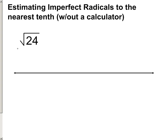We've got to find between what two whole numbers this radical lies. 4 squared is 16, and 5 squared is 25. This is 24, so it fits right in between those. That means on a number line, 4 is going to be on the left side and 5 is over on the right side, and somewhere in between, radical 24 is lying there on that number line.